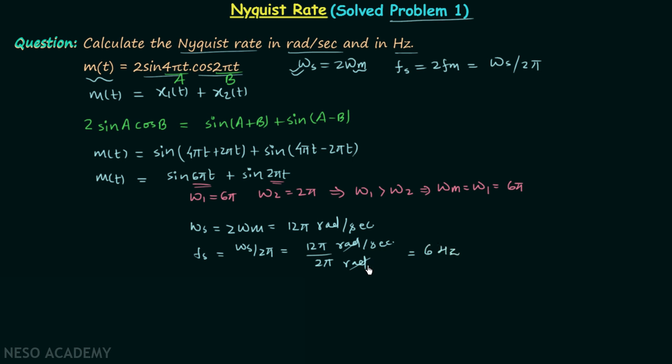The Nyquist rate in radians per second is 12π, and the Nyquist rate in hertz is 6.